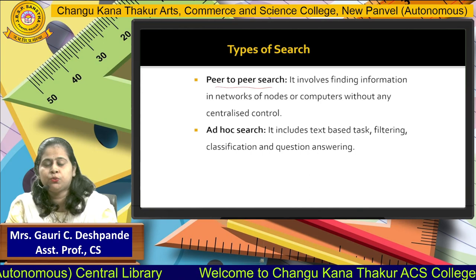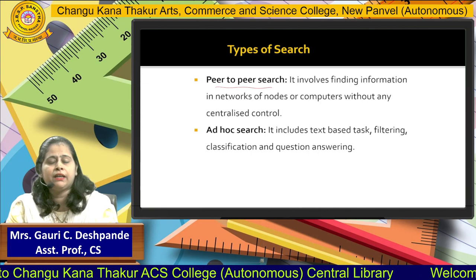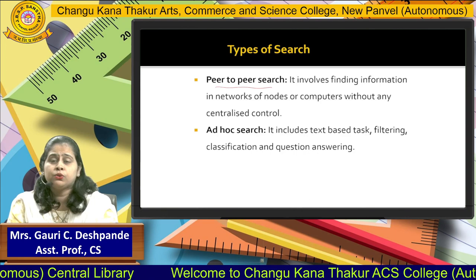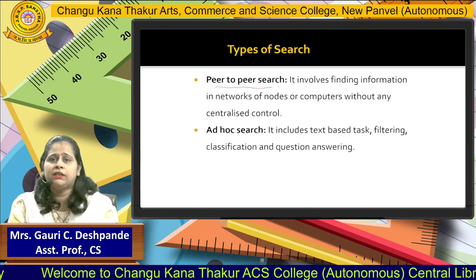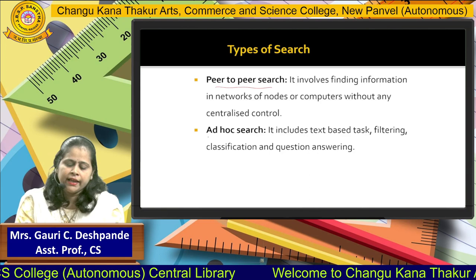The next search is peer-to-peer search. In peer-to-peer search, if you want to find out data from the network or from different centralized control, then we can use peer-to-peer search. A peer acts as both a client and a server, so there is no need for any centralized control. This is the main advantage of peer-to-peer search.